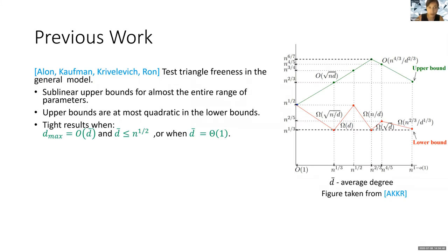Alon, Kaufmann, Krivilevich, and Rohan studied the problem of testing triangle-freeness in the general model. They provided sublinear upper bounds for almost the entire range of parameters. The upper bounds are at most quadratic in the lower bounds, and they show tight results only for two special cases: one when the max degree is of the same order as the average degree and the average degree is at most √n, and the other when the graph is sparse, namely when the average degree is constant.